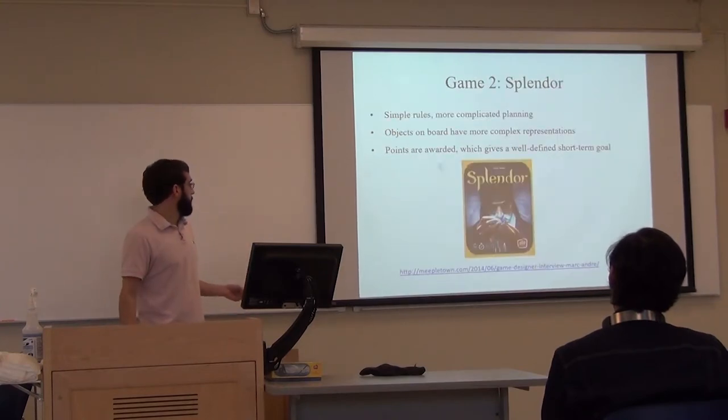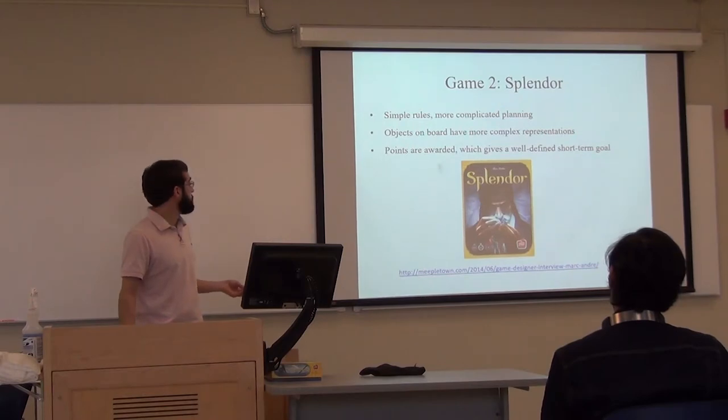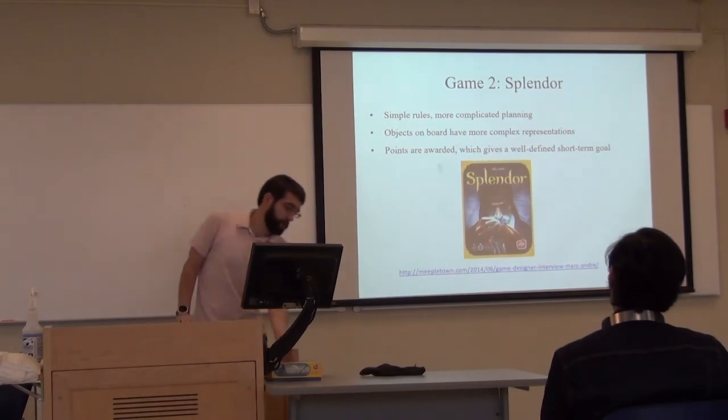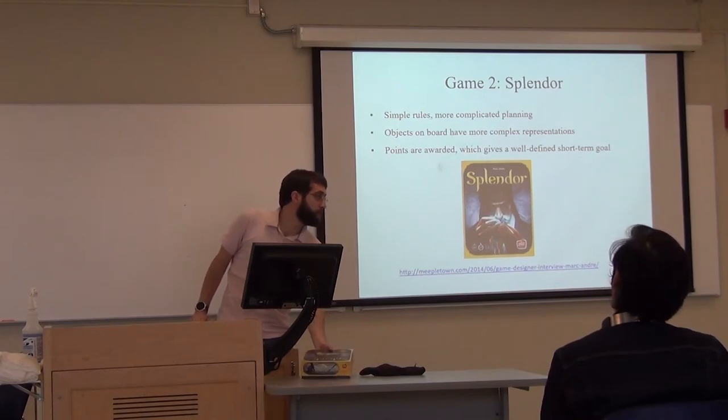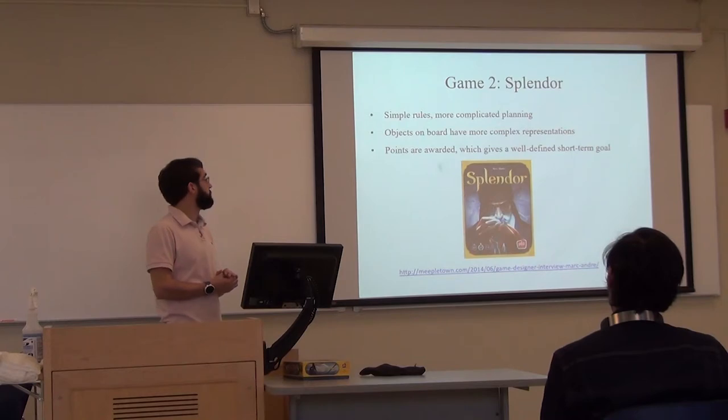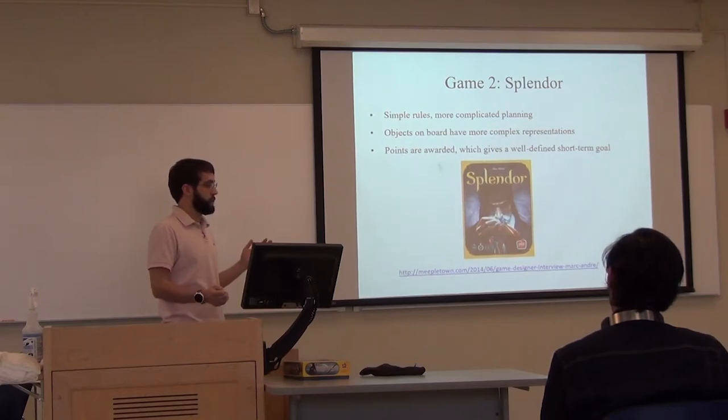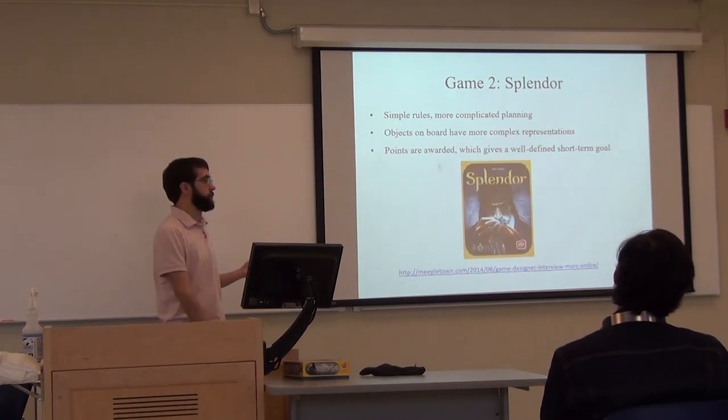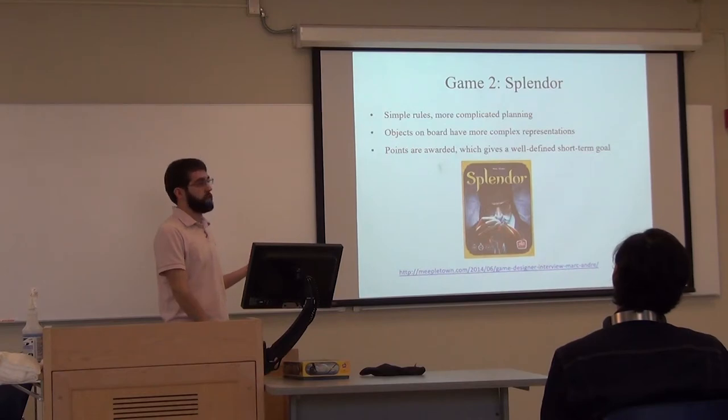The second game I decided to work with is called Splendor. I have a copy here for anyone who wants to look at it afterwards. This game has relatively simple rules, but it has a bit more complicated planning involved. Objects on the board are a little bit more complex. But this game has points instead of specific cards. It has a point system that determines the winner instead of having to buy a certain number of cards. This gives it an easier to define short-term goal.